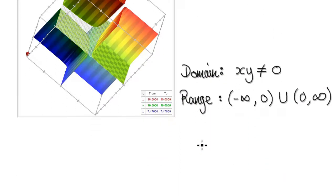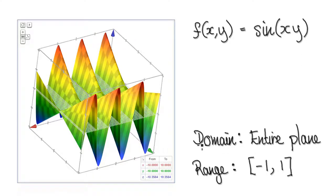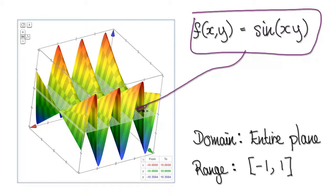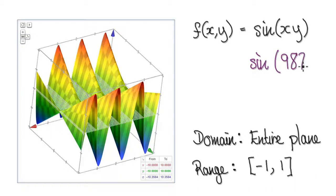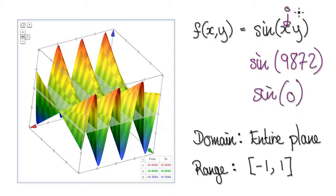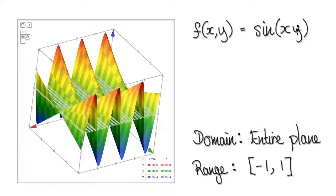One more example. Get a 3D graph plotter, punch this in, and it will give you this surface. You can see there's a sine element to this surface. For the domain, think about when this will break down — this thing will never break down. You can take sine of any number, like 9872. The domain is the entire XY plane. And for the range, it is between negative 1 and 1, so the range is [−1, 1].